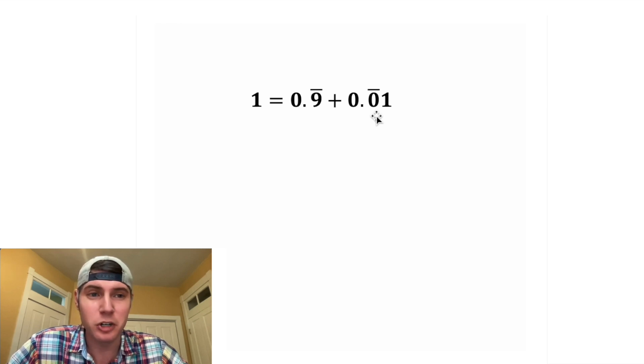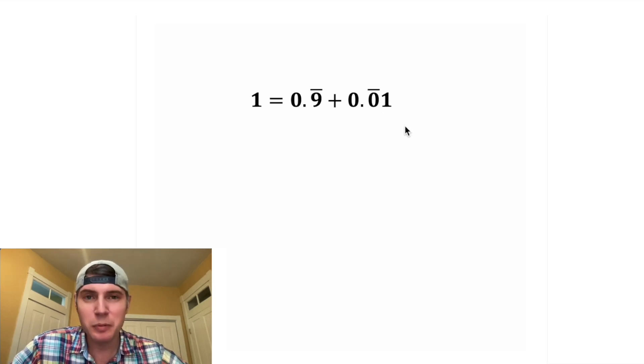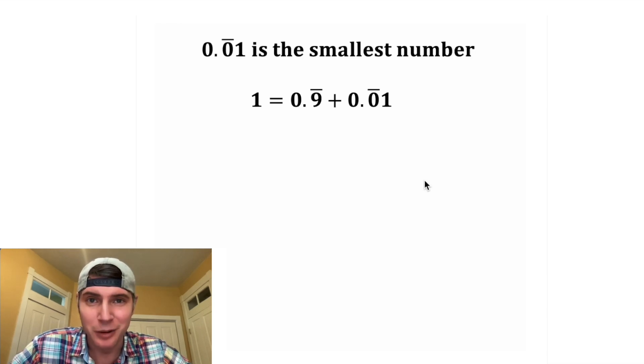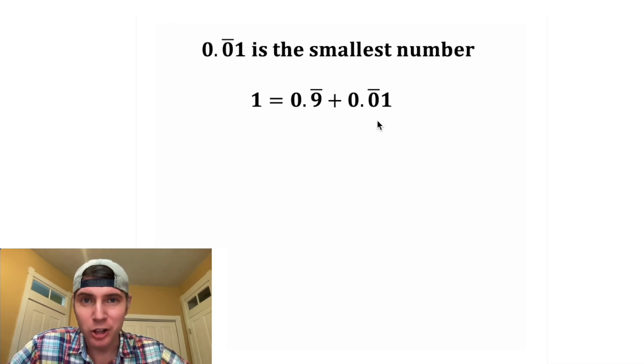Some people call it 0.0 recurring with a one at the end. I've seen people in comments call it an infinitesimal, or in other words, the smallest possible number. They say you cannot get smaller than this number.